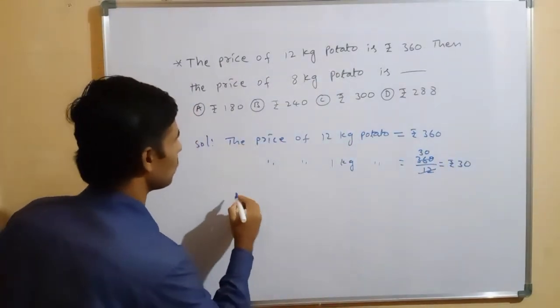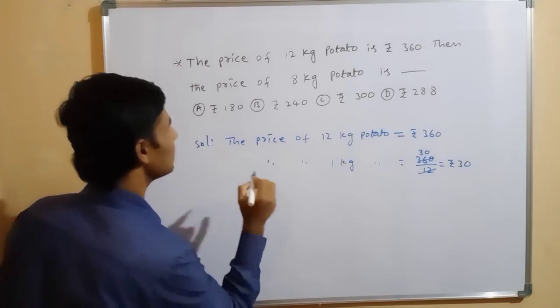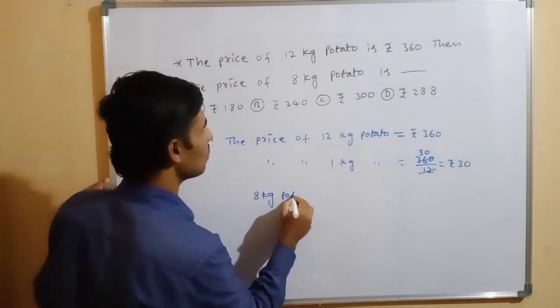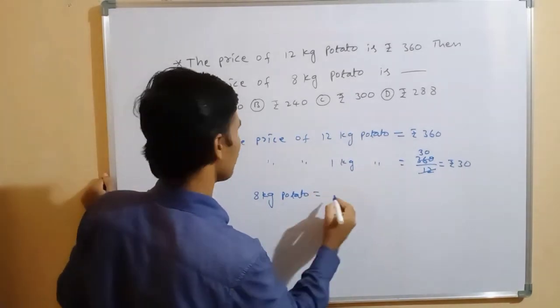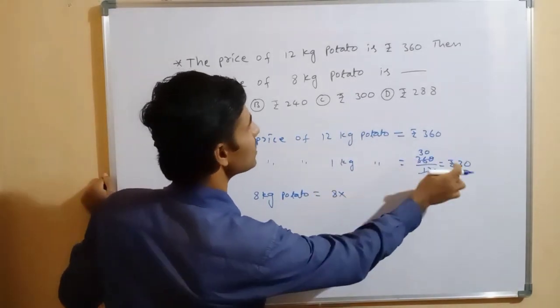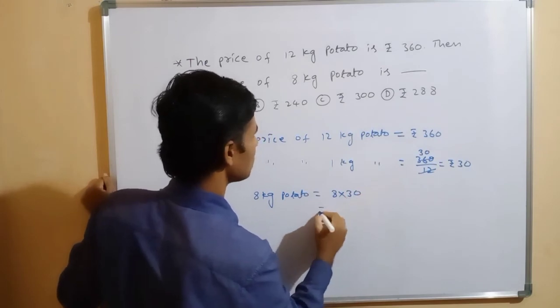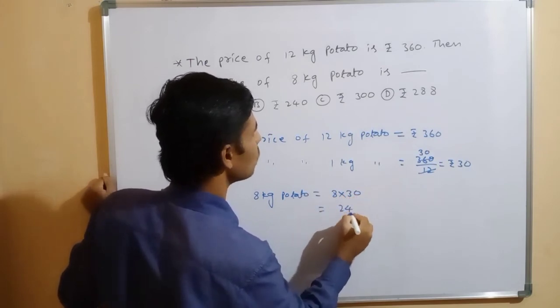8 kg potato. Okay. 8 kg potato equal to, see here 8 into 1 kg equal to how much you got 30. So, 8 threes are 24. 240.